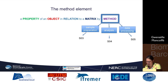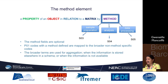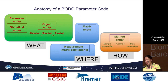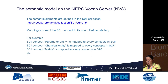Method is covered by three vocabularies. The method fields are optional. A P01 code with a method maps to a broader non-method-specific code, and the broader terms can be used for aggregation, or when the information is stored elsewhere in the schema, or when the information is simply not available. This is just a summary of the anatomy of a BODC code — the what, the where, and the how of measurements. The semantic model is now available on the NERC Vocab Server under the collection P01, and mappings have been used to connect each concept to its controlled vocabulary.